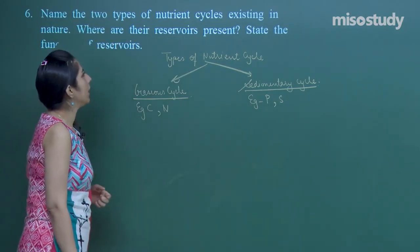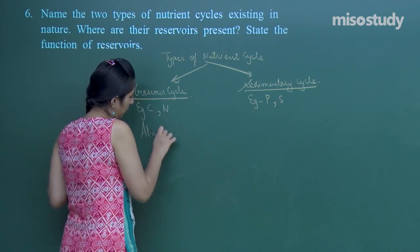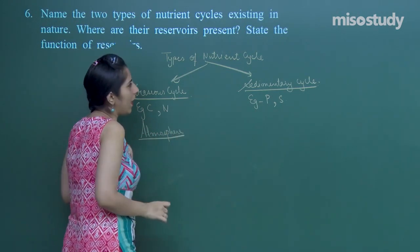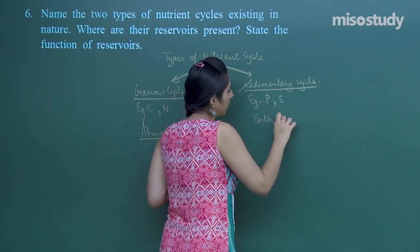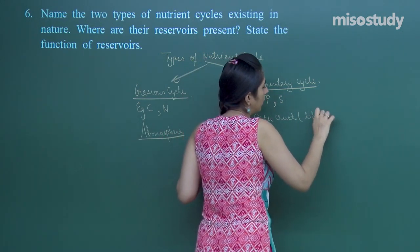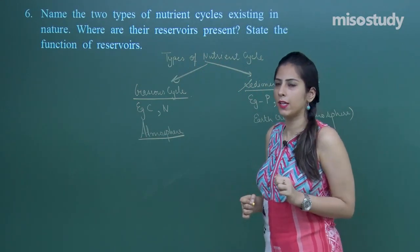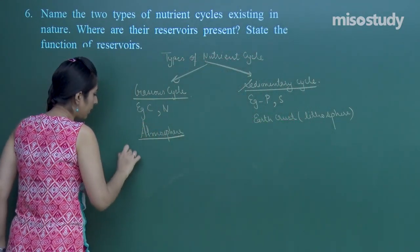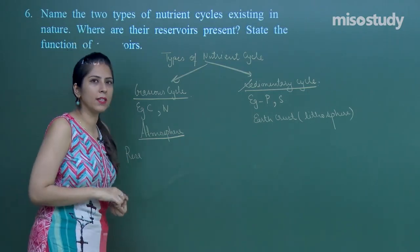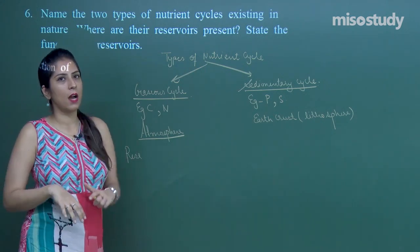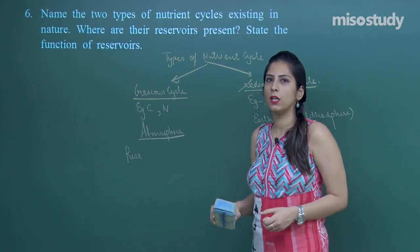For the gaseous cycle, the reservoir is in the atmosphere. For the sedimentary cycle, the reservoir is in the lithosphere or earth's crust. The function of the reservoir is that it acts as a source and gives information regarding the influx and outflux. The reservoir becomes deficit whenever there is an imbalance in the influx and outflux. That was question number six.